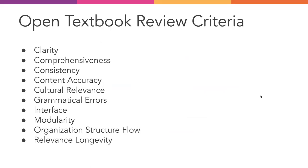Now a little bit more about the open textbook review criteria. OEN member institutions often host workshops at which faculty are invited to choose and submit a review for a book. The review is based on these criteria: clarity, comprehensiveness, consistency, content accuracy, cultural relevance, grammatical errors, interface, modularity, organization/structure/flow, and relevance and longevity. These have been adapted from BCcampus, and we do consider this to be a light review.